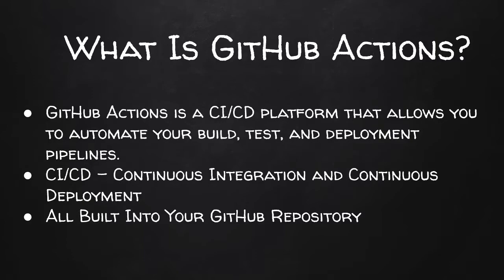Continuous Integration, or CI, is the process where teams integrate their code early and often into one central location. In the case of our course, this will be GitHub, but this could be any platform. The key concept is you're integrating it into one spot.